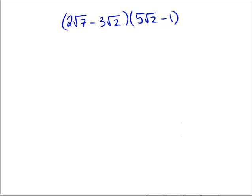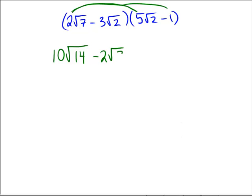Assuming you gave it a good shot: first, 5 times 2 is 10, and √7 times √2 is √14 — no simplification needed. 2 times 7 has no extra worries either. Outside: minus 2√7. Inside: minus 15√4. Actually, √4 simplifies — √4 equals 2. Last: a minus times a minus gives plus 3√2.